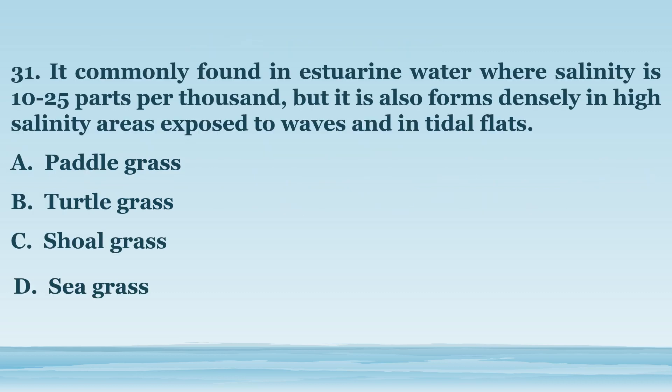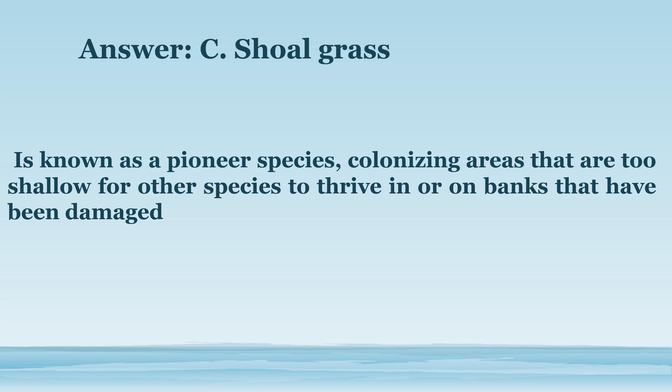Number 31. It is commonly found in estuarine water where salinity is 10 to 25 parts per thousand, but it also forms densely in high salinity areas exposed to waves and in tidal flats. A. Paddle grass. B. Turtle grass. C. Shoal grass. D. Sea grass. The answer is letter C. Shoal grass. Is known as a pioneer species, colonizing areas that are too shallow for other species to thrive in, or on banks that have been damaged.